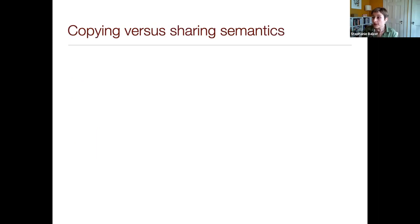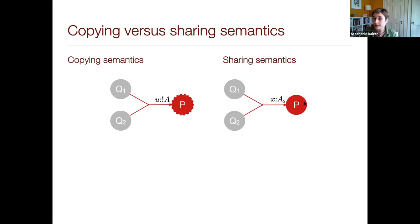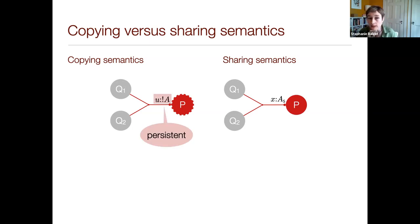Let's distill the distinction between a copying and a sharing semantics. The copying semantics is what we get with linear bang: a persistent server P with two clients. On the other side, a true shared server — displayed differently, in red, because red signals danger. The persistent channel versus the shared channel is indicated by the subscript S on the type — the shared process offers a session of type A-sub-S where A-sub-S is a shared type.